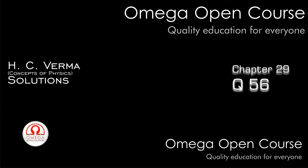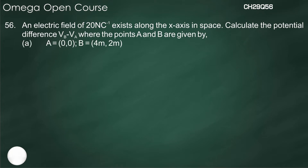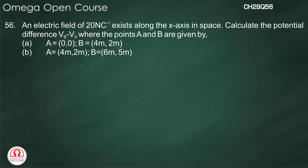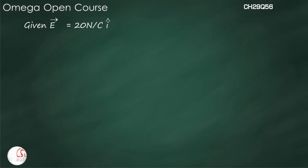HC Verma, Chapter 29, Question 56. An electric field of 20 newton per coulomb exists along the x-axis. Calculate the potential difference VB minus VA for the following parts: Part a: A = (0, 0), B = (4m, 2m). Part b: A = (4m, 2m), B = (6m, 5m). Part c: A = (0, 0), B = (6m, 5m). Also find any relation between the answers of parts a, b, and c. The electric field E = 20 newton/coulomb in the i-cap direction along the x-axis.